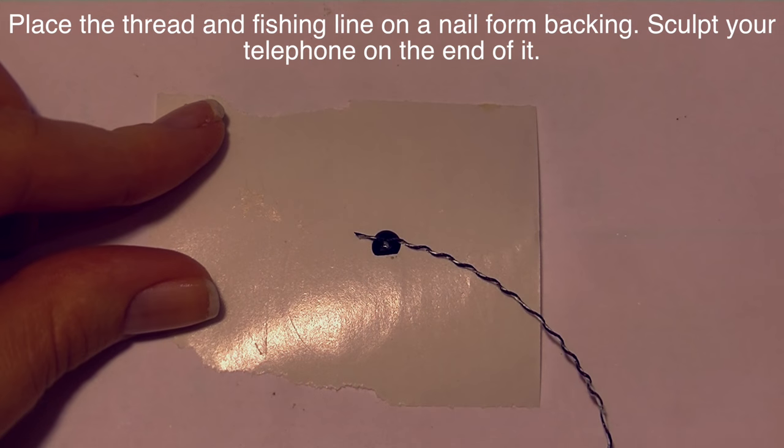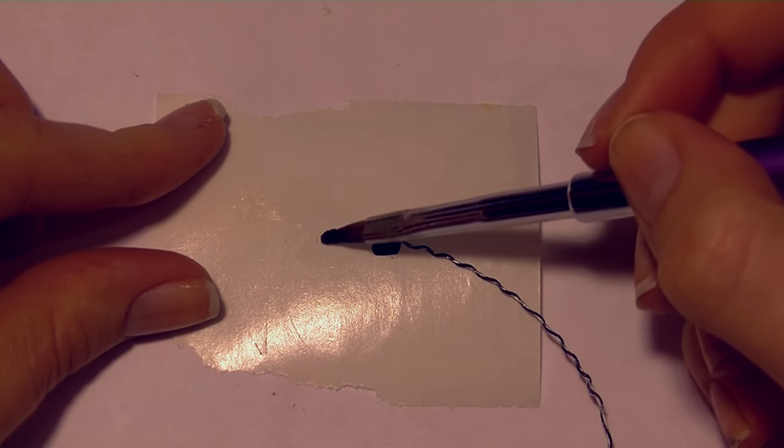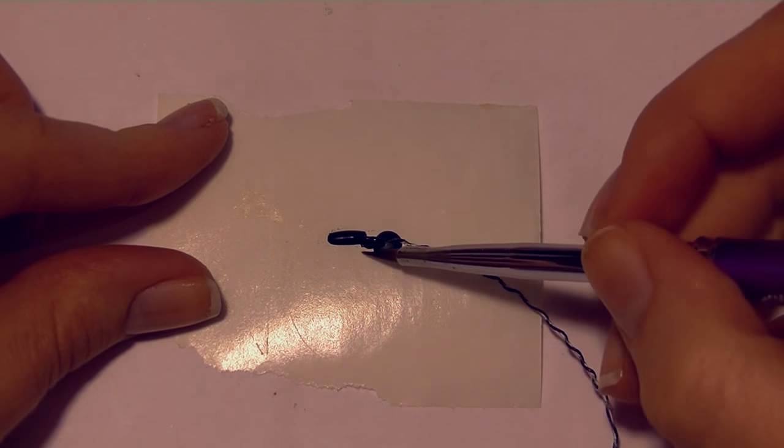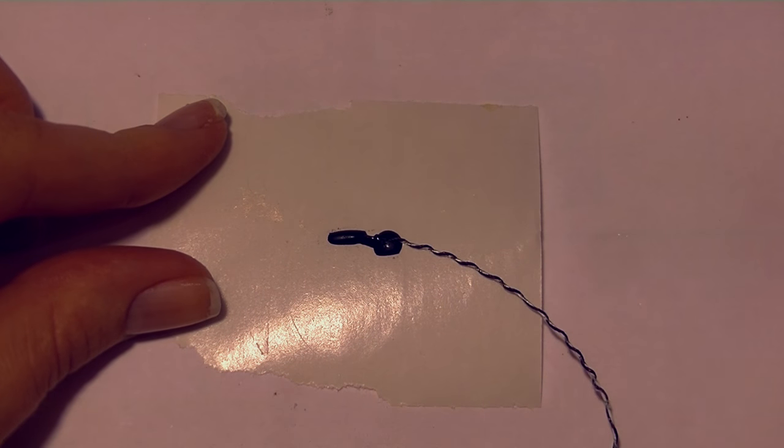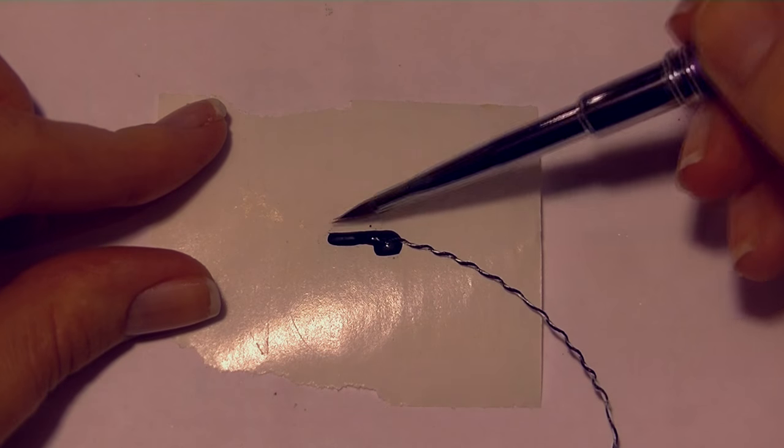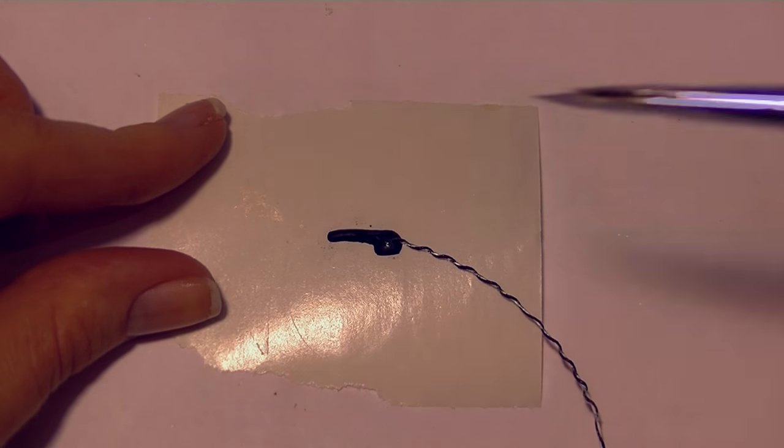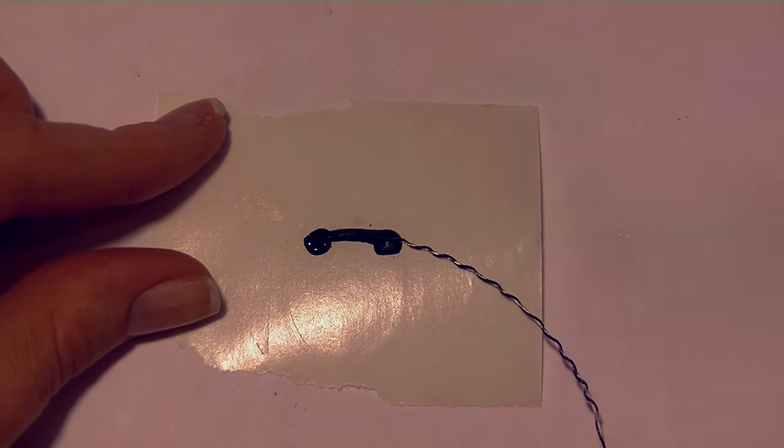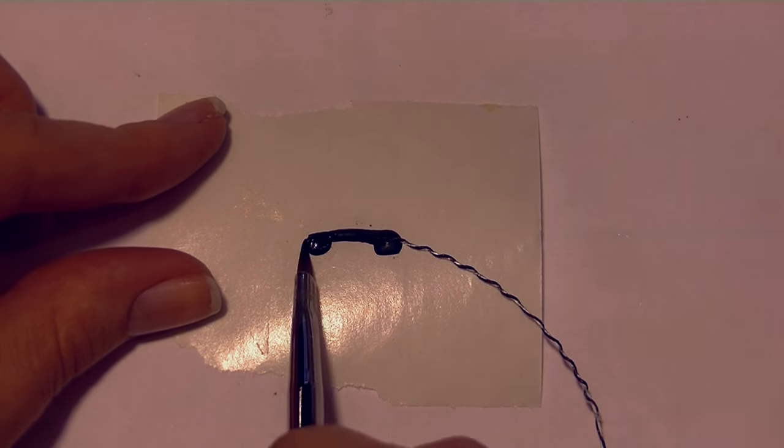On the nail form backing we're going to be creating our phone. Place the end of that phone cord onto a bead of black acrylic so that can set in there. Then we're going to form that first bead into one end of the telephone receiver, the end that you would speak into. Then add the long narrow part that you would usually hold in your hand, and then on the other end we're going to be adding the part with the speaker in it that you would listen to.